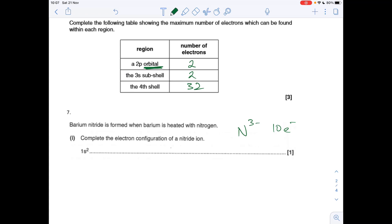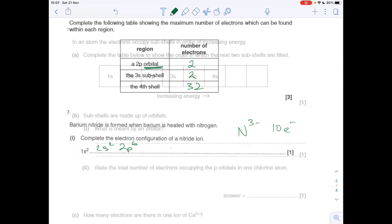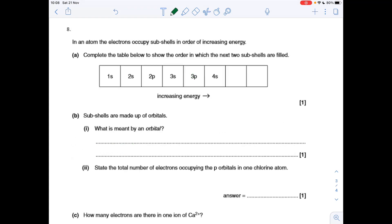Question 8a: which two subshells are filled after 4s? Straight after 4s is 3d, and then it goes to 4p. Part b: they just want the definition for orbital. That's a region of space in an atom which can hold up to two electrons with opposite spin.